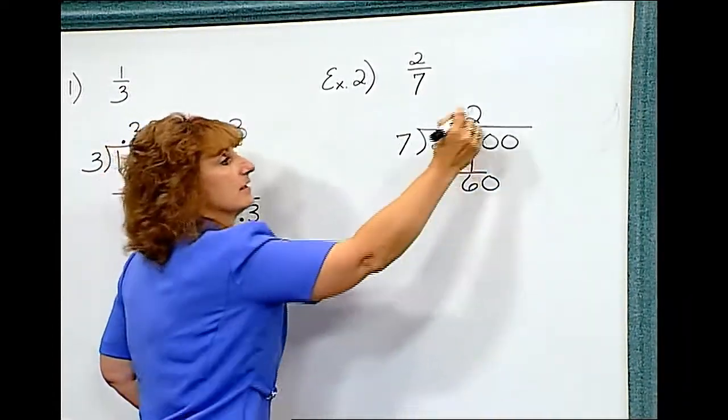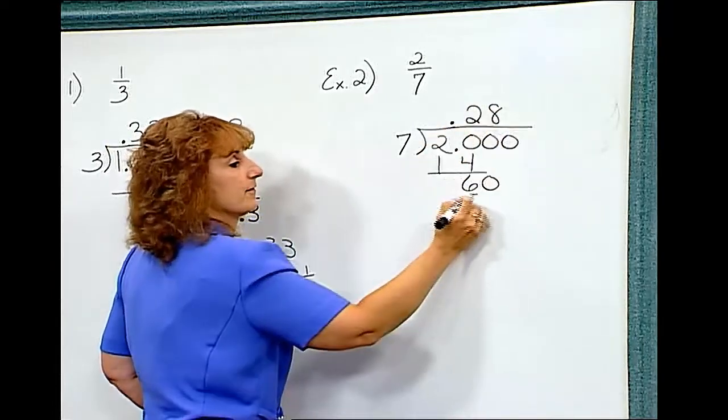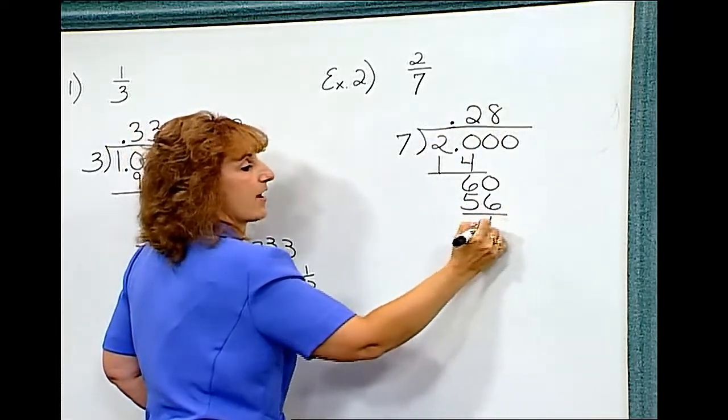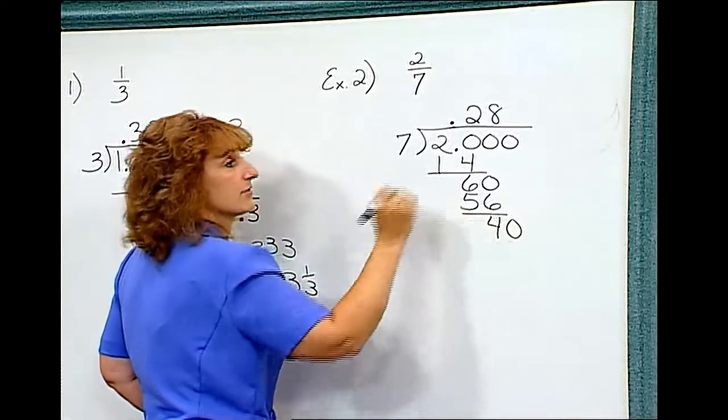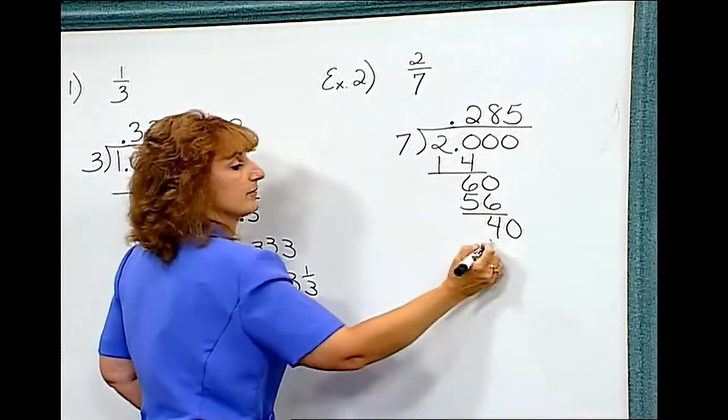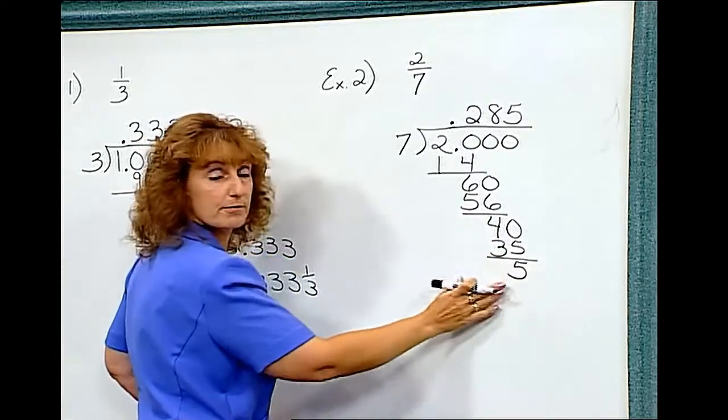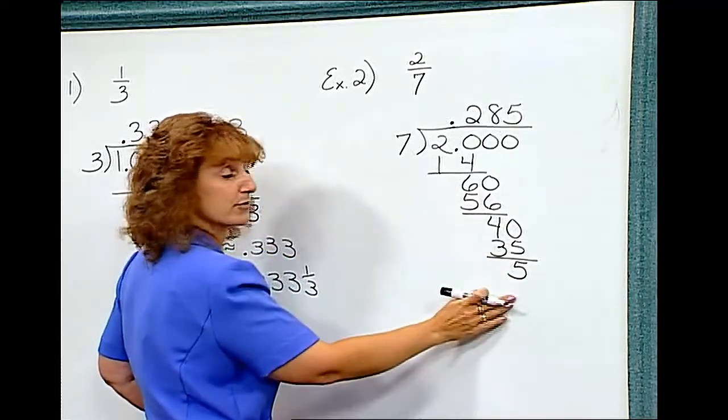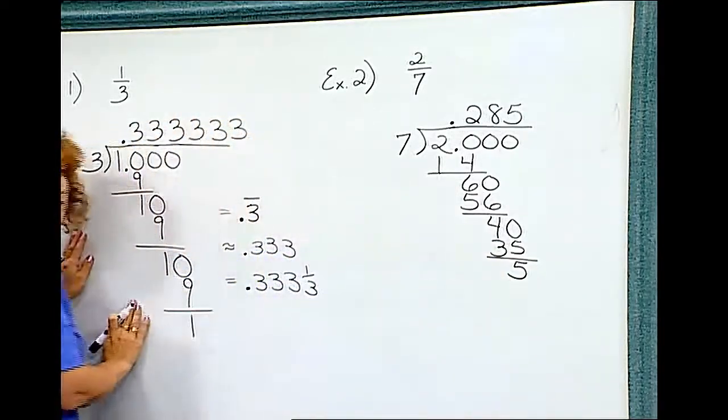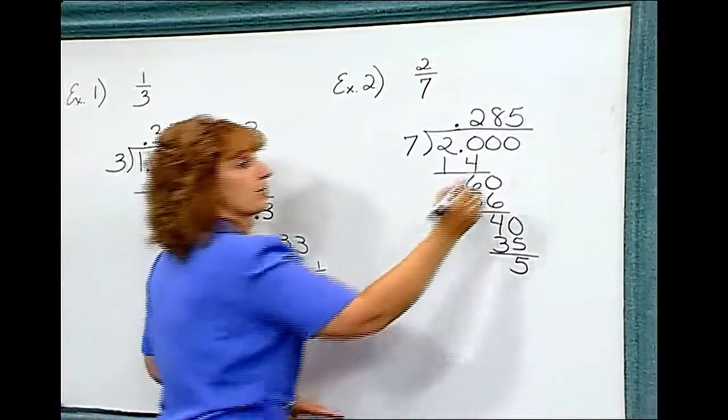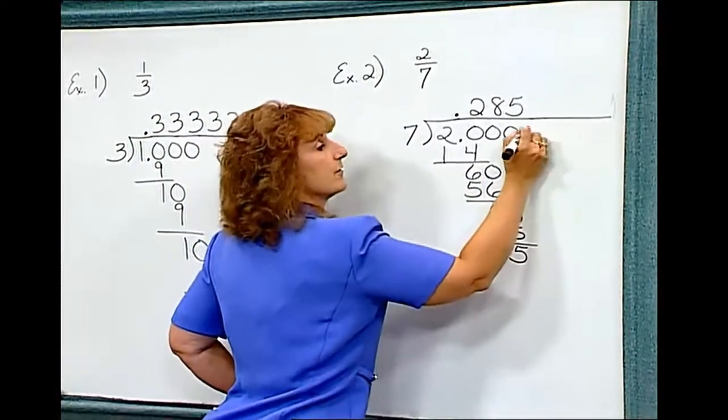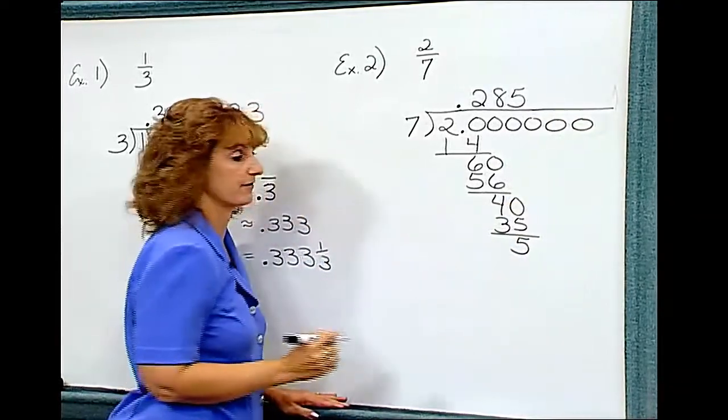Seven goes into sixty eight times. We subtract. Seven goes into forty five times. We're still getting a remainder, but this is not the same remainder we got each time like we did in the first problem. So we're going to continue a little bit farther to see if we can discover a pattern.